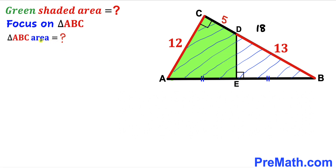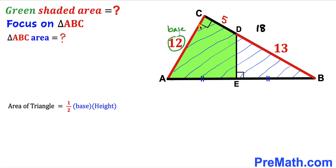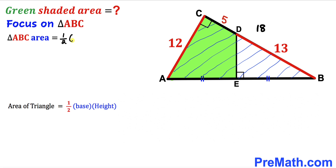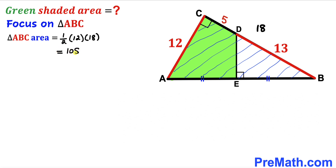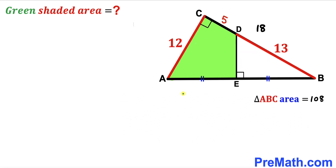Now let's focus on the big right triangle ABC and calculate its area. Using the formula: area equals one-half times base times height, where AC is the base (12) and BC is the height (18), the area of triangle ABC is one-half times 12 times 18, which gives us 108 square units.